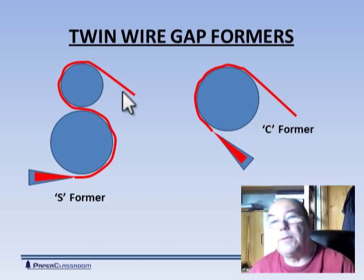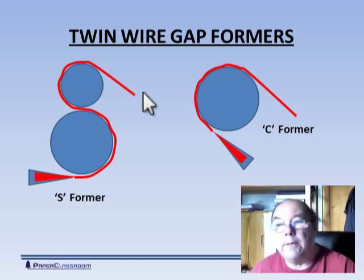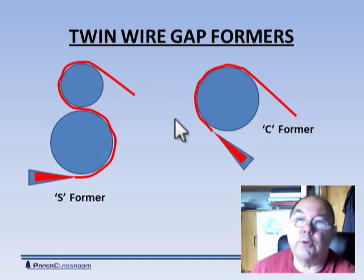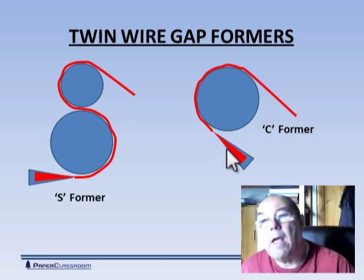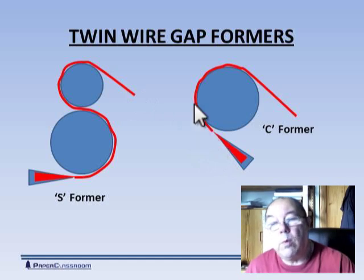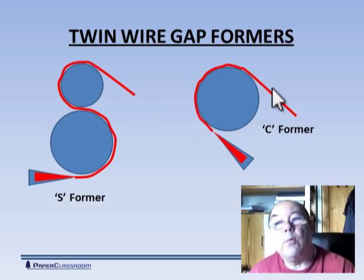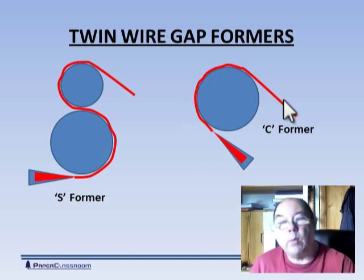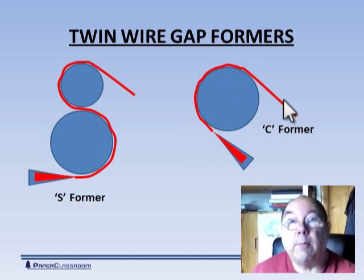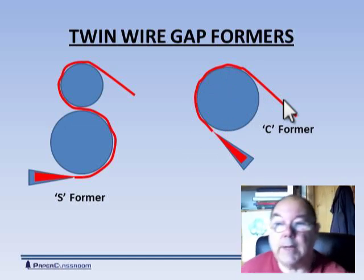The sheet then comes off, the wires separate, and the sheet then gets transferred onto a press fabric and onto the next section. With the C former, we only have one roll, we still have two wires, and we still need to transfer the sheet off the forming wire and onto a press fabric before we take it onto the next stage.